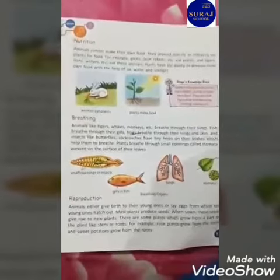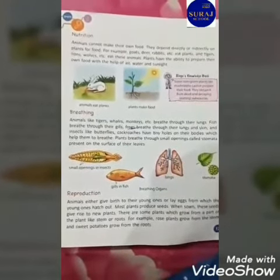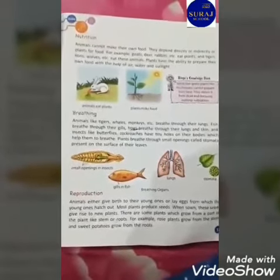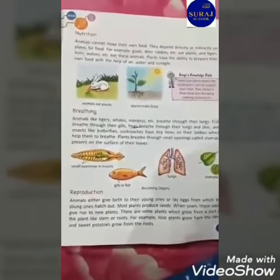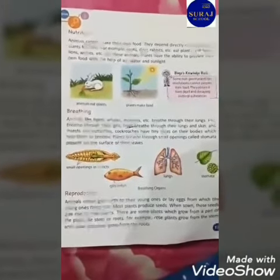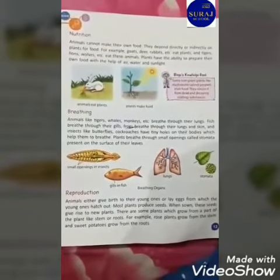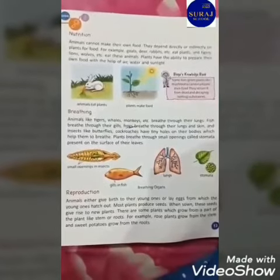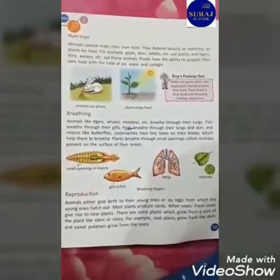My second point is breathing. Animals like tigers, whales, and monkeys breathe through their lungs. Insects like butterflies or cockroaches breathe through tiny holes on their body which help them to breathe.